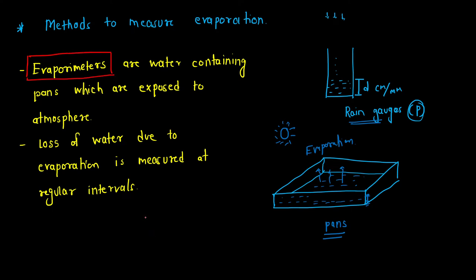These evaporimeters are essentially pans containing some water. We note the initial level of water, then after a certain time, due to evaporation, the liquid gets converted into gas and the level decreases. This decrease in water level is what we measure.